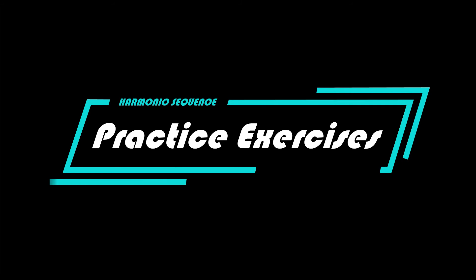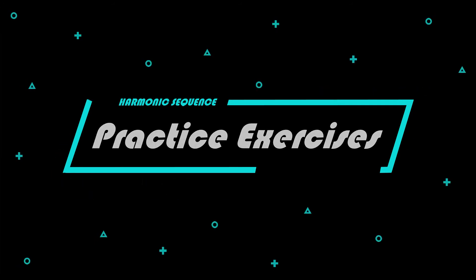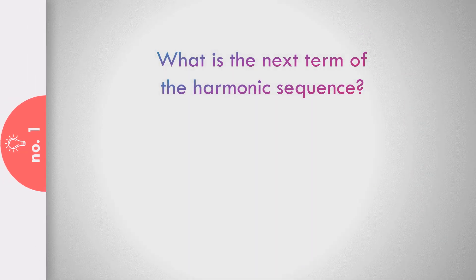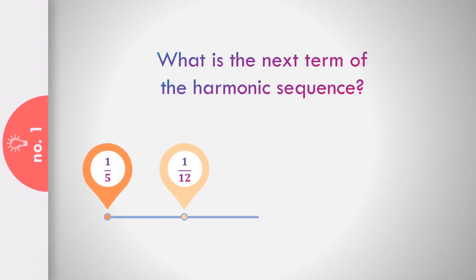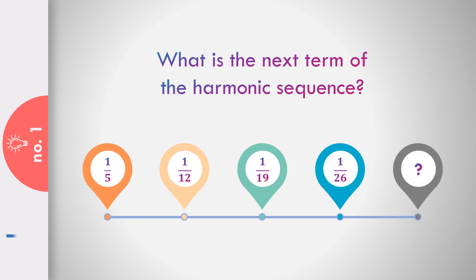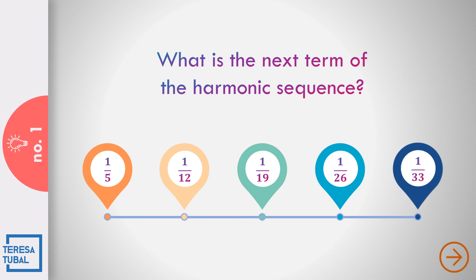Let us practice what you have learned regarding harmonic sequence. Question number 1: What is the next term of the harmonic sequence 1/5, 1/12, 1/19, and 1/26? Correct — the answer is equal to 1/33.